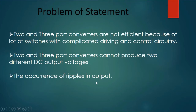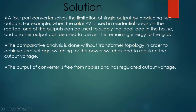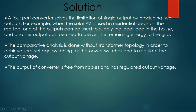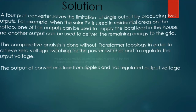The occurrence of ripples in the output is also a limitation. A 4-port converter solves the limitation of single output by producing two outputs. For example, when the solar PV is used in residential areas on the rooftop, one output can supply the local load in the house and another can deliver remaining energy to the grid. A comparative analysis is done without transformer topology to achieve zero voltage switching and regulate the output voltage, which is free from ripples.